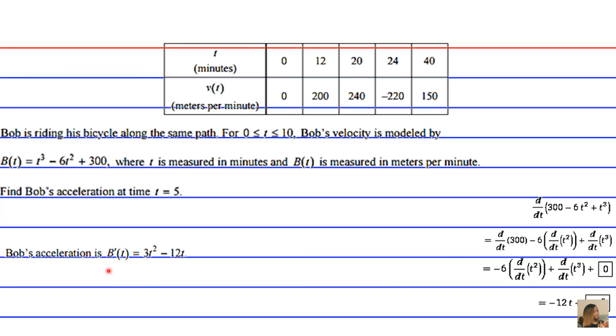So Bob's acceleration or b prime of t is going to be 3t squared minus 12t.